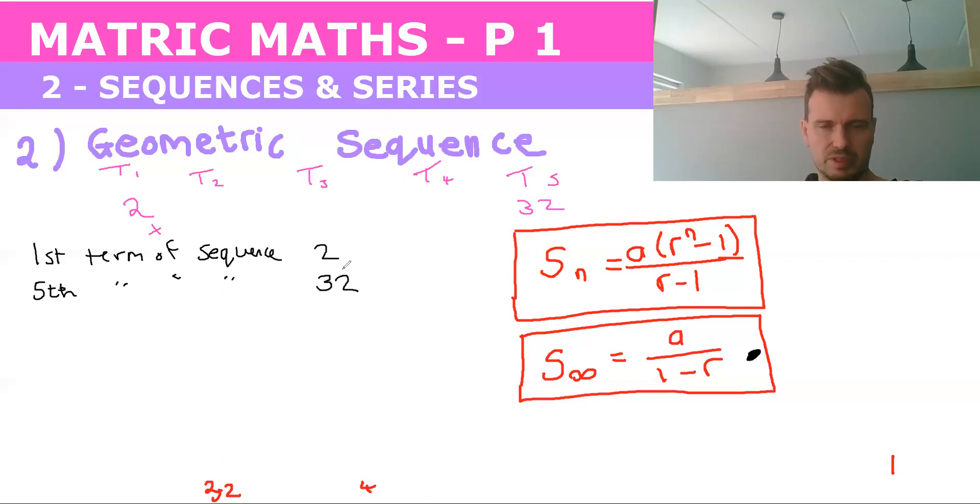We can kind of see what the answer is already, but let's say we didn't know, because these numbers two and 32 could be a bit more difficult. What we did was we knew that each time we're timesing by r, times r to get to this one, times r to get to T3, times r to get to T4, and times r to get to T5.